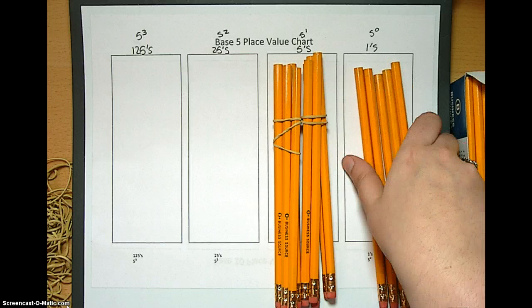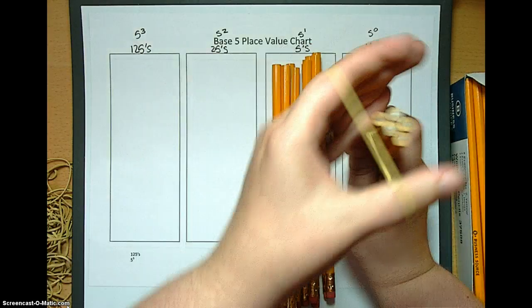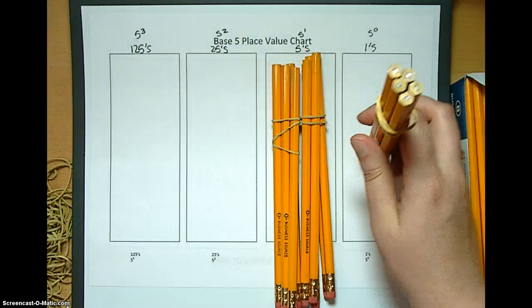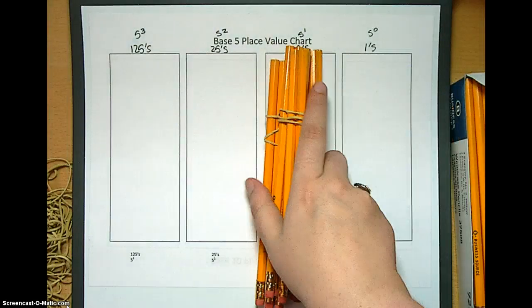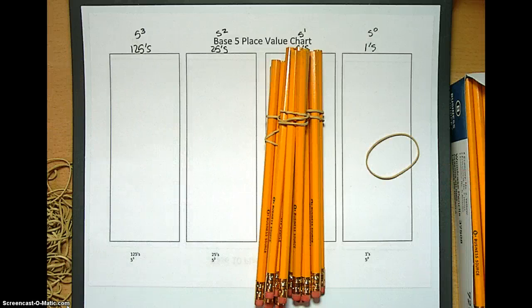What's next? When the fifth one goes down, it doesn't go there. It gets bundled up with a rubber band and placed over in the 5s because now it's a 5. So now we have 3 bundles of 5. And how many ones? 0 ones.